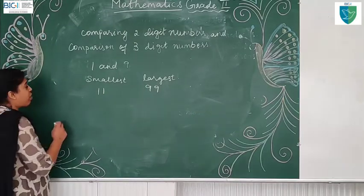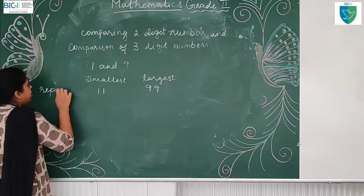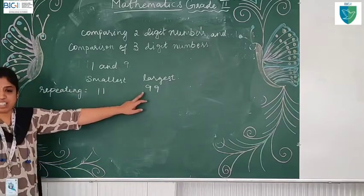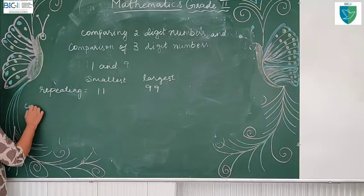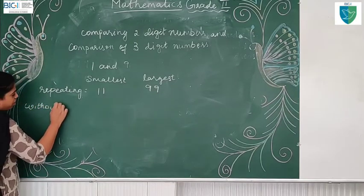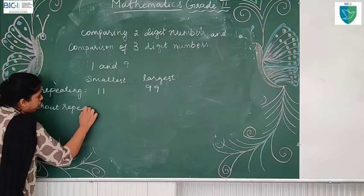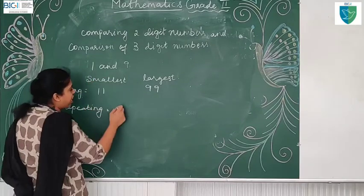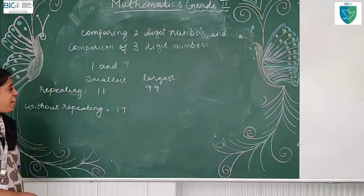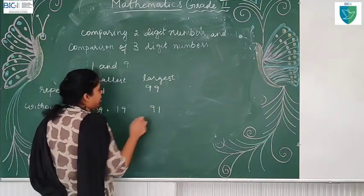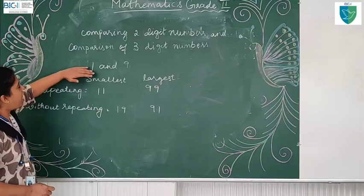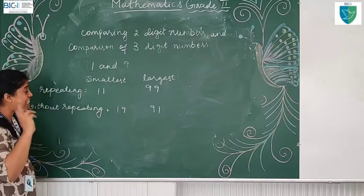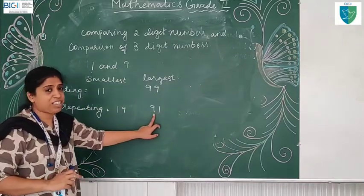Without repeating the digits, the smallest number is 19. Now 1 and 9 — without repeating the digits: children, first you have to compare which is smaller. The smallest is 1 here and the biggest is 9 — so without repeating, the smallest number is 19 and the biggest number is 91.